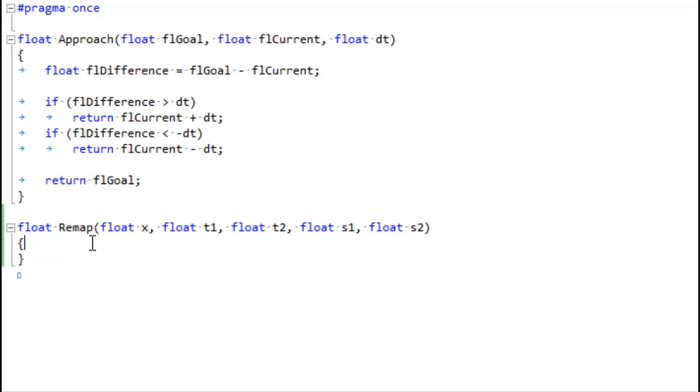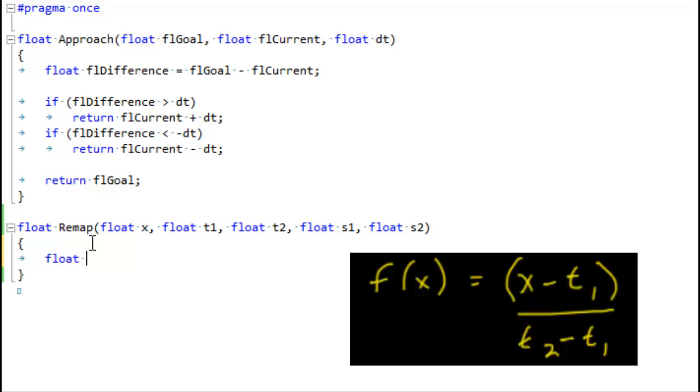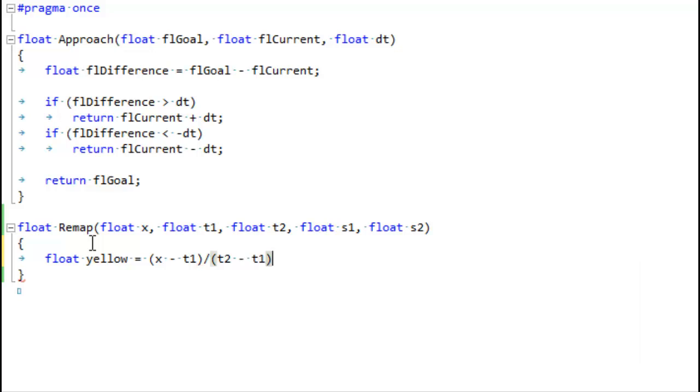Here's our remap function. Let's fill it out. We're going to start by doing the F of X part. So we're going to make the yellow part. The yellow part is just going to be X minus T1. Let's put that in some parentheses. And then we're going to divide that by the distance between T1 and T2. And that's all we have to do for yellow.